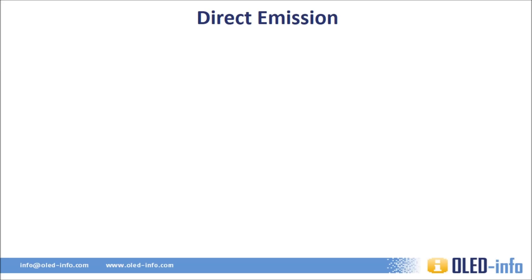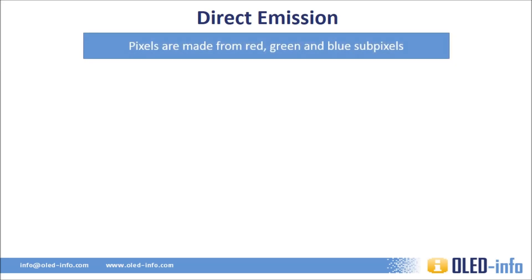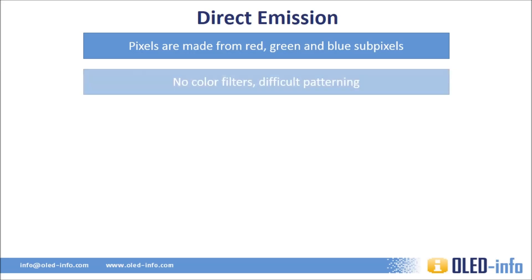The classic OLED design uses a direct emission architecture, in which each pixel is made from three sub-pixels that emit red, green, and blue light. The advantage of a direct emission design is that it is very efficient, as all the light reaches the eye and only the colors that need to be displayed are lit. The major disadvantage is that it requires very precise patterning of the sub-pixels.